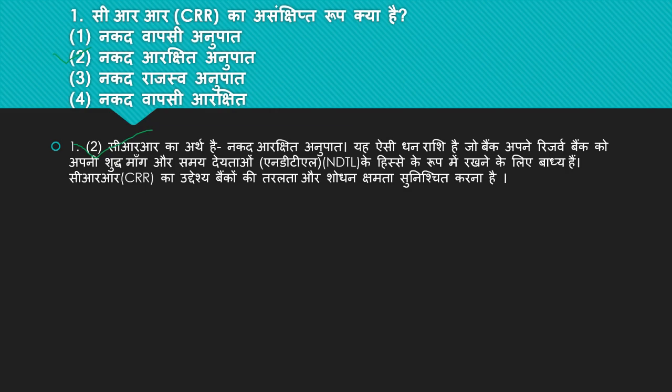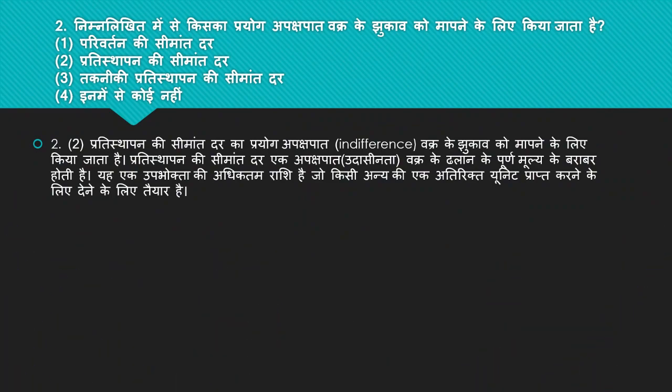Chalo, badhte hain next question ki taraf. Aagla question hai: nimlikhit mein se kis ka prayog udaasinta vakr ke jhukao ko maapne ke liye kiya jata hai? 4 options hain: parivartan ki seemaant dar, pratisthaapan ki seemaant dar, takniki pratisthaapan ki seemaant dar, in mein se koi nahi. Iska right answer phir se do hai — pratisthaapan ki seemaant dar. Pratisthaapan ki seemaant dar udaasinta vakr ke dhalan ke maan ke barabar hoti hai; yeh ek bhokta ki adhiktam raashi hai jo kisi ane ki ek atirikt unit prapt karne ke liye dene ke liye taiyar hai.